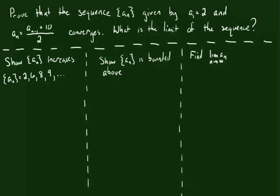Hello, everybody. We're going to be showing you how to find the limit of a recursively defined sequence. As you see here, the recursively defined sequence we have starts at 2, and basically what we do to find the next term in the sequence, we just take the previous term, add 10 to it, and divide it by 2. That's going to create the next term in the sequence.